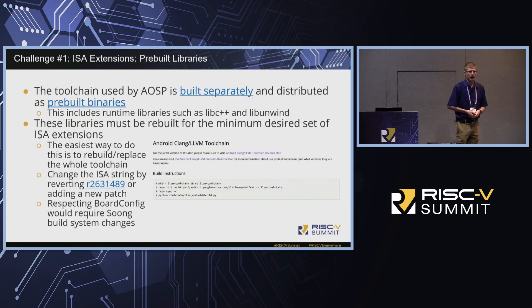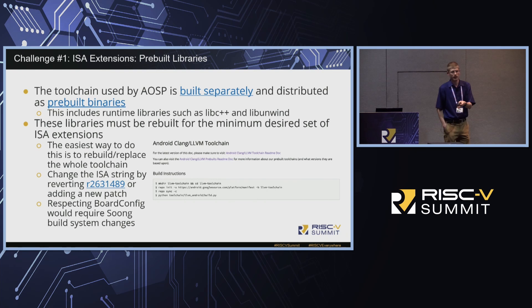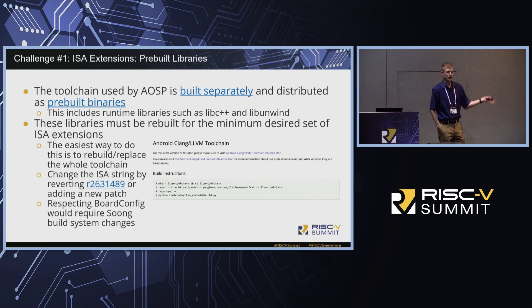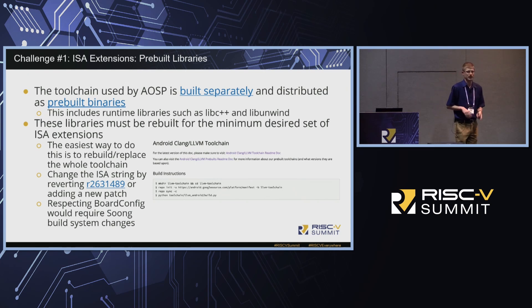That takes care of all native code built as part of the AOSP platform. For everything pre-built, you've got to rebuild it. The toolchain is built separately, and importantly that includes runtime libraries like the C++ standard library. It's easiest to rebuild the whole toolchain since Google provides good instructions via a README in the toolchain repository. Rebuilding gives you a C++ standard library with whatever ISA extensions you support. There's just a mapping from the Android target triple to the ISA string — it's essentially a two-line patch. Google's example shows how they added ZBB, so you can add or remove whatever extensions you need.